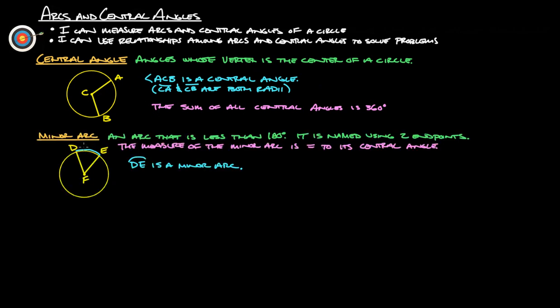A minor arc is an arc that's less than 180 degrees. So in this case here, DE is a minor arc. It's named using just two endpoints, D and E, and it's always assumed if you've got DE, you're going to always measure the short distance. The measure of the minor arc is equal to its central angle. So if this is, say, 40 degrees here, this arc measure would be 40 degrees.